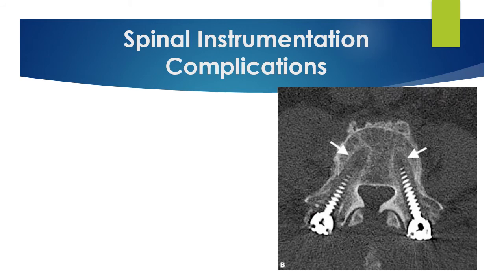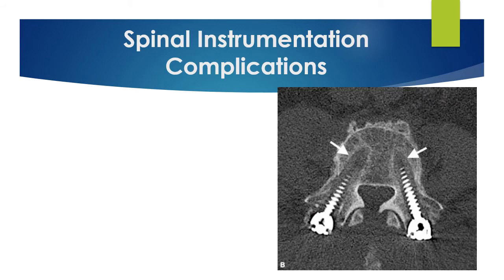Spinal instrumentation complications can occur with any fusion surgery. These include screw loosening, a screw pulling out, breakage or fracture of the actual implant, and migration of the implant. As seen in the picture, the screws are unscrewing and coming out of position.